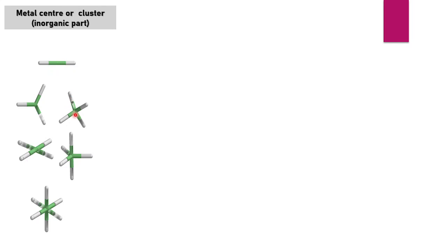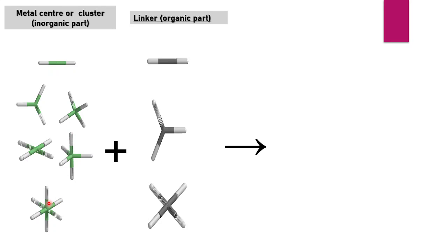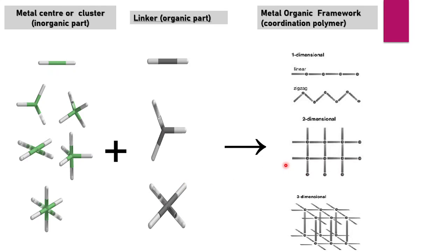In coordination chemistry, metals can be 2-coordinate, 3-coordinate, 4-coordinate (tetrahedral or square planar), trigonal bipyramidal, and 6-coordinate octahedral. These can form 1-dimensional, 2-dimensional, and 3-dimensional coordination polymers or MOF frameworks.